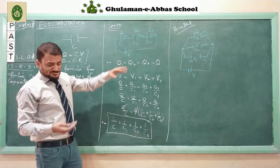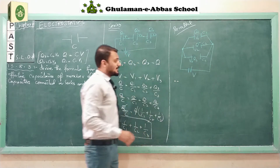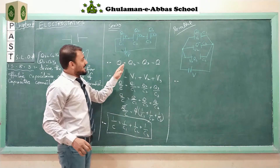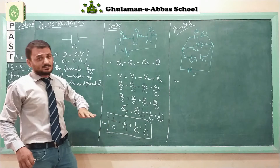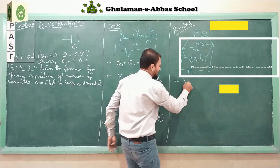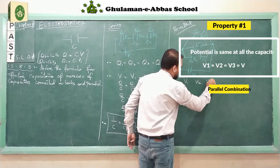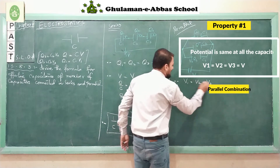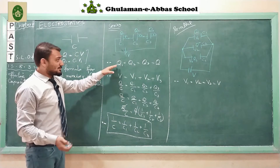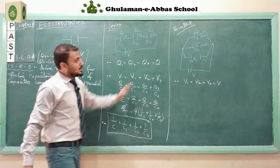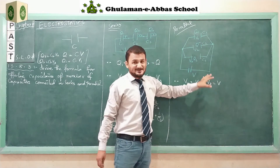The first characteristic of parallel combination: the potential difference across all capacitors is the same. So V1, V2, and V3 are all equal to V in parallel combination. In series combination the charge is the same, whereas in parallel combination the potential difference is the same. The second characteristic is that the total charge Q equals Q1 plus Q2 plus Q3.